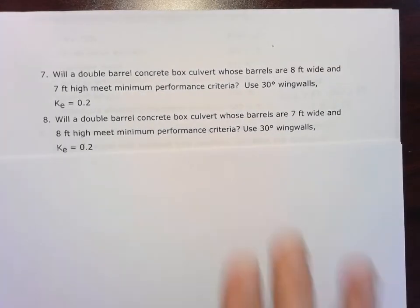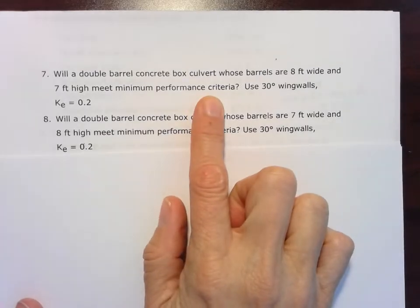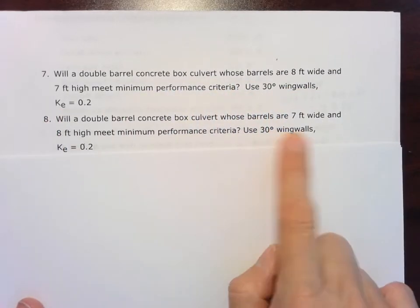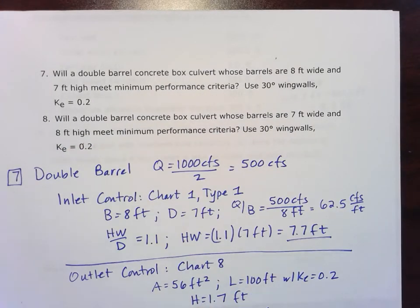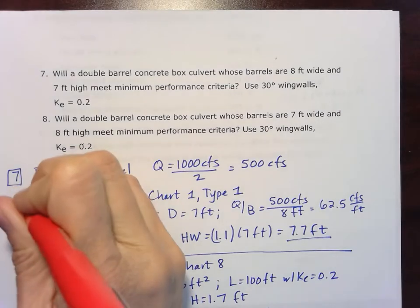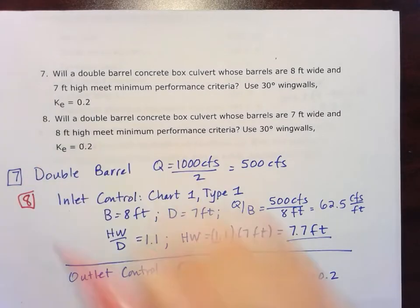So this is very similar to the problem we just solved, number 7, where we had 8 foot wide and 7 feet high. Now we have 7 feet wide and 8 feet high. If we take a look at our number 7, basically we're just switching around those numbers. So that's for our number 8 here. I'll kind of put it under it and together it.